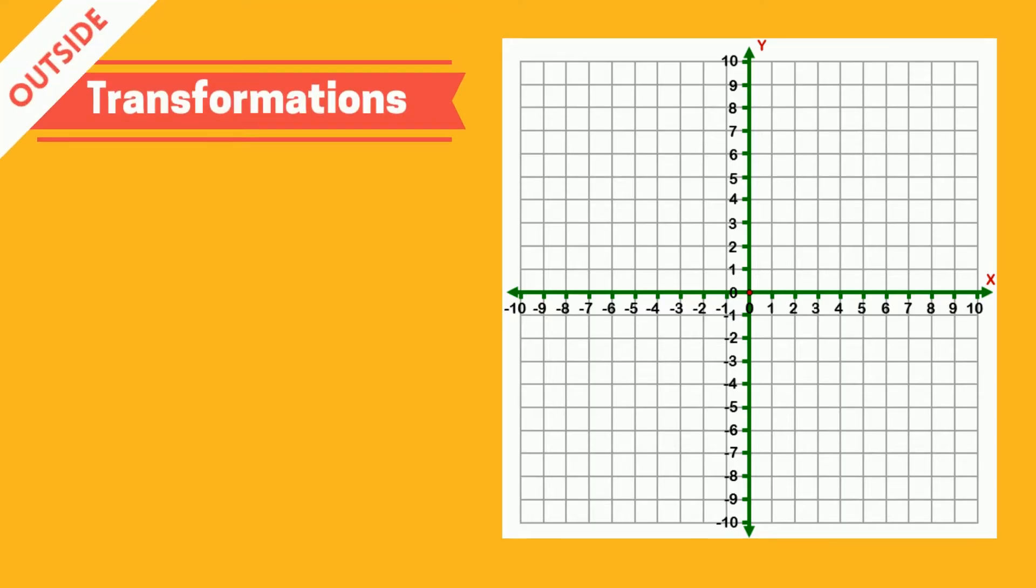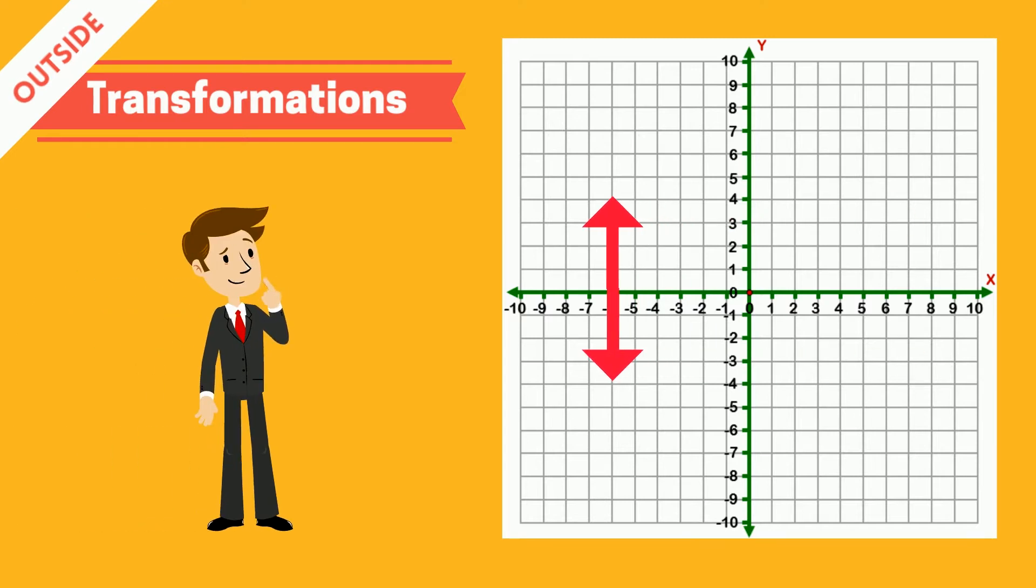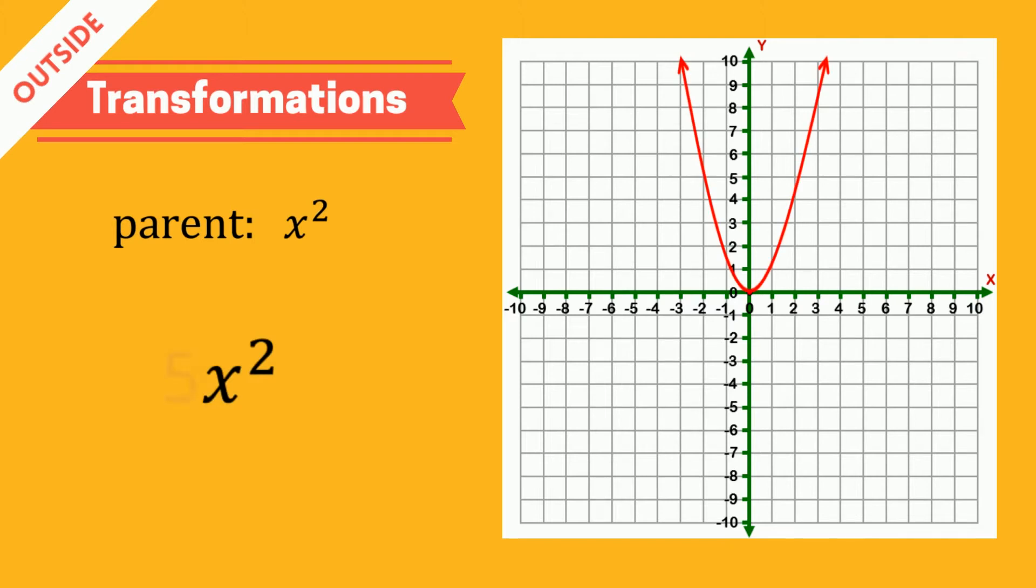When it comes to the outside transformations, these affect the outputs or the y values of a function, and they behave much like you would expect. If we multiply a function by 5, it stretches the function by 5. Add 3 to the outside, and it goes up by 3.